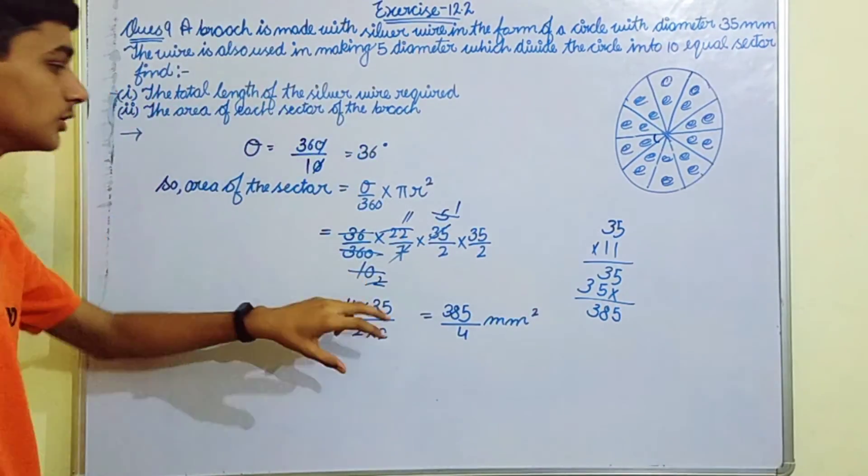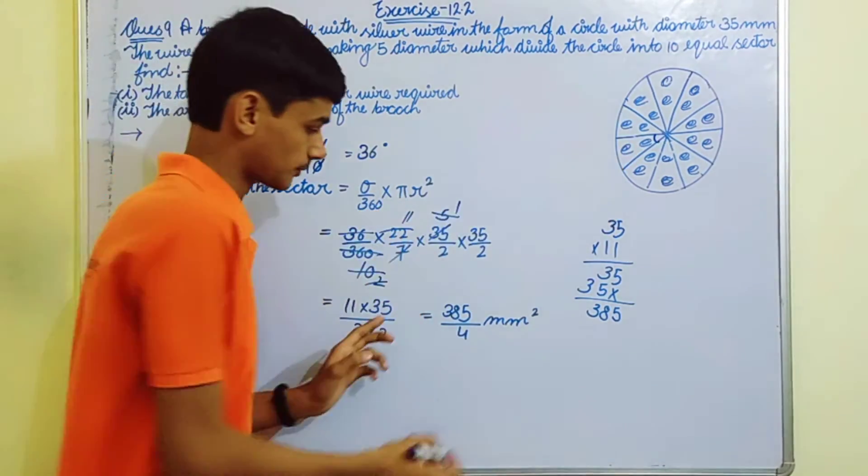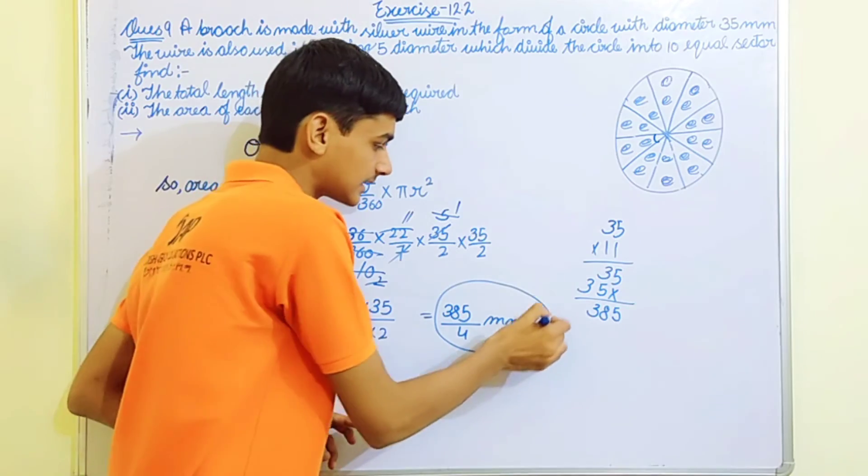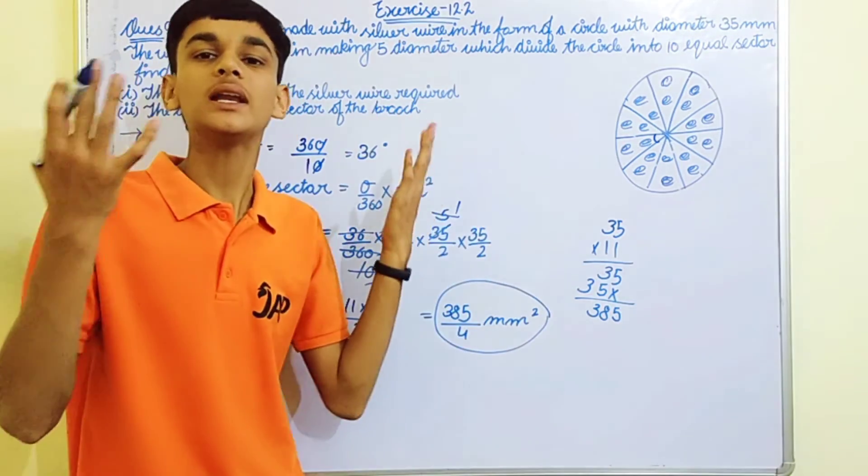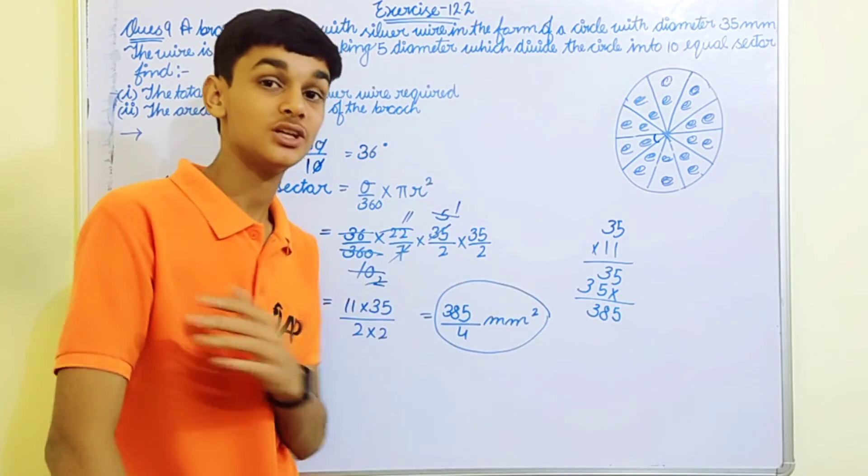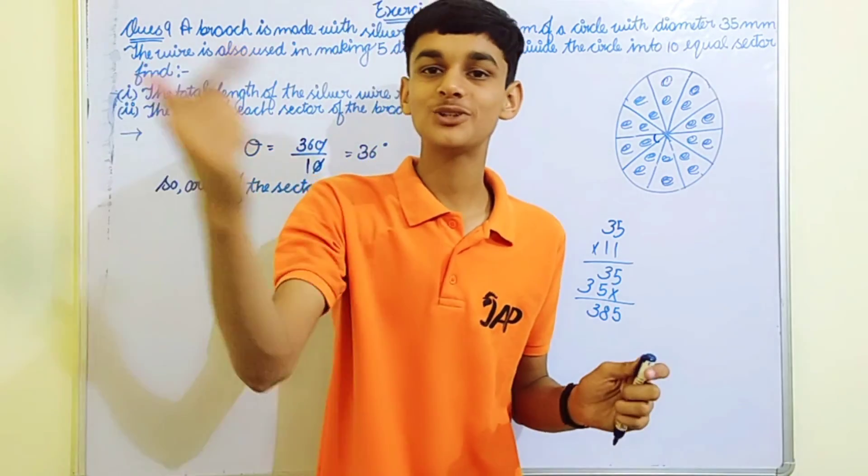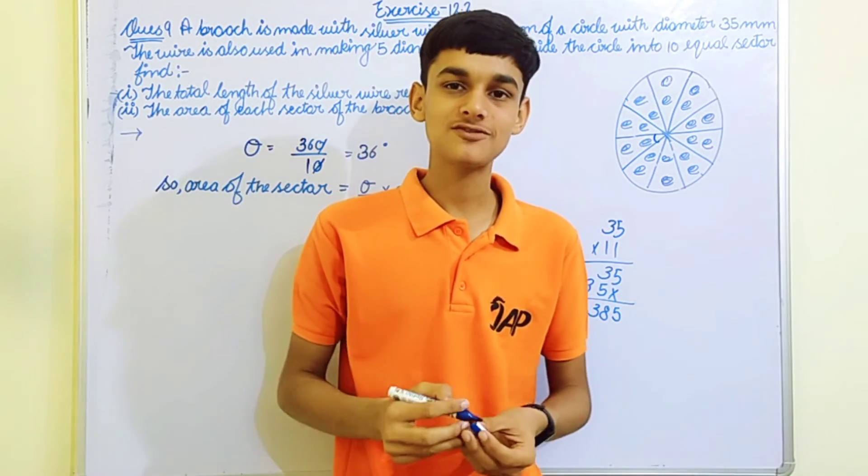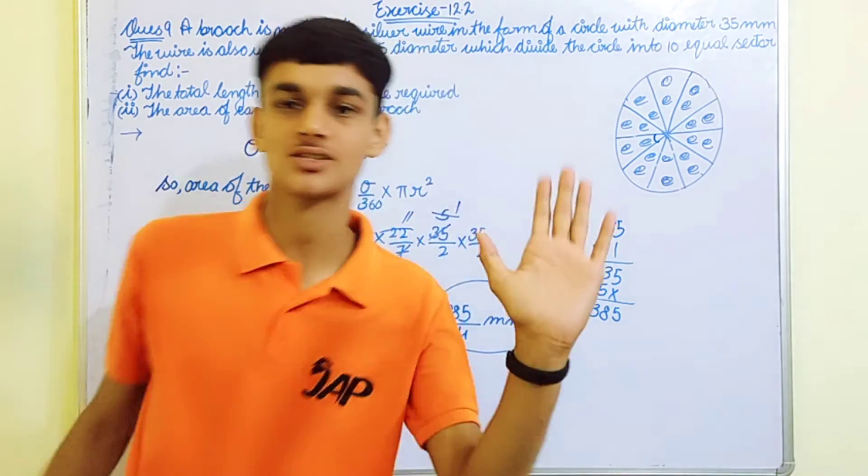385 by 4 mm² is the area of one sector of the brooch, and every sector is of the same area because all the sectors in this brooch are equal. So easy peasy lemon squeezy! If the question seemed easy, then please quickly hit like and subscribe to the channel. See you in the next video. Till then, bye bye guys! Stay healthy, stay safe. Good night, good night, bye bye!